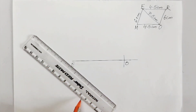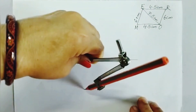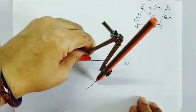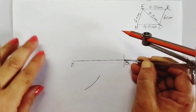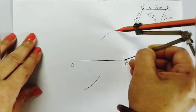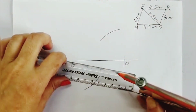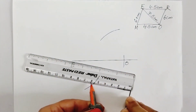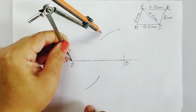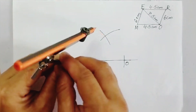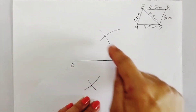From point E, take an arc of radius 4.5 cm on one side, and from point O take an arc of radius 4.5 cm on the other side. Then from point E take an arc of 6 cm radius, and from point O take an arc of 6 cm radius. You are now getting all four vertices.